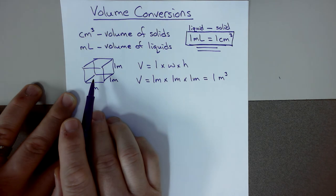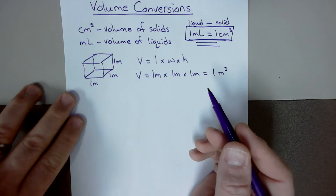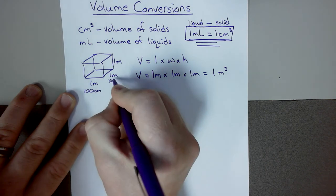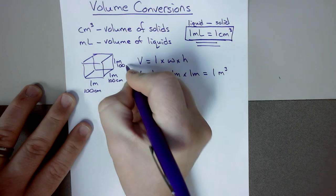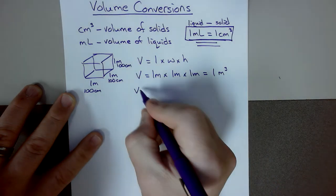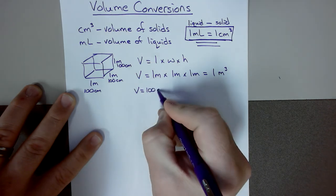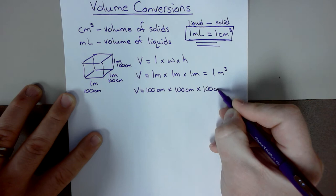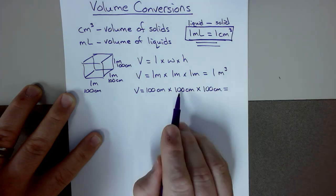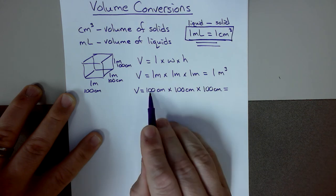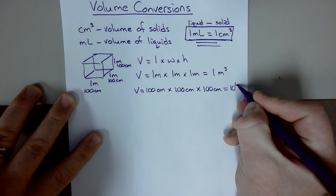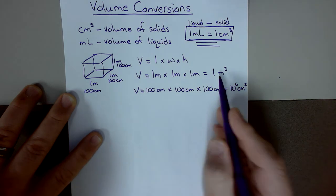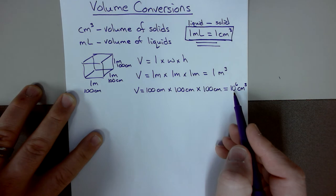Now I'd like to know what the volume of this cube would be in cubic centimeters. We know that one meter is also 100 centimeters, so each side is 100 centimeters. The volume would be 100 centimeters times 100 centimeters times 100 centimeters. That's 100 times 100 times 100, which is 10 to the sixth — one million. So one cubic meter is one million cubic centimeters.